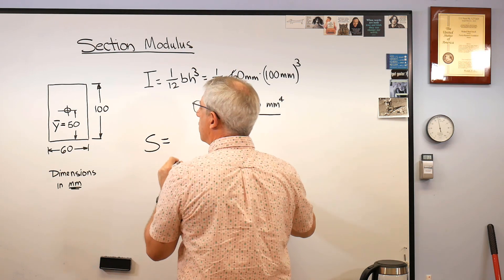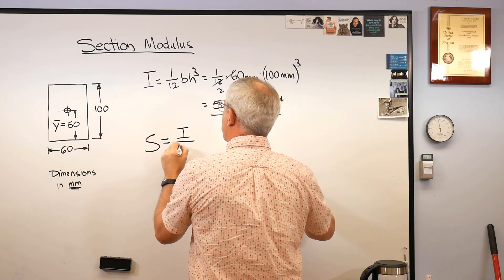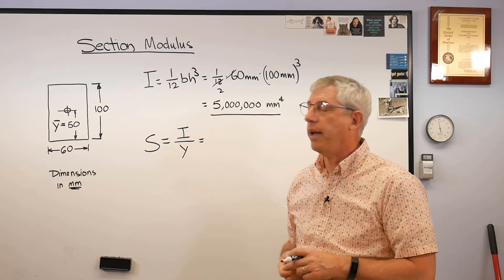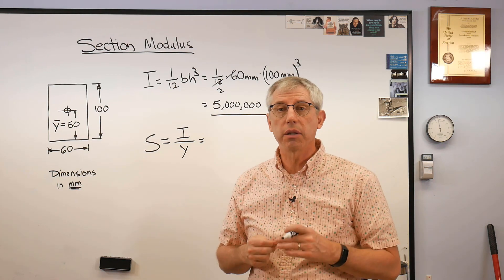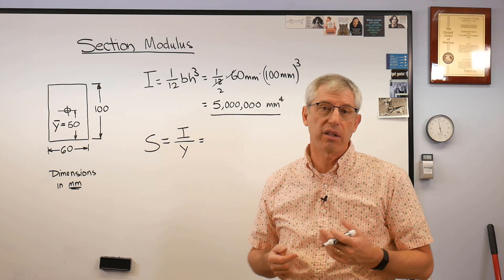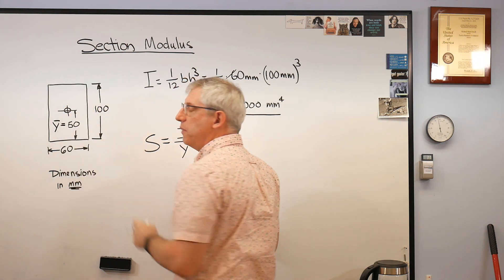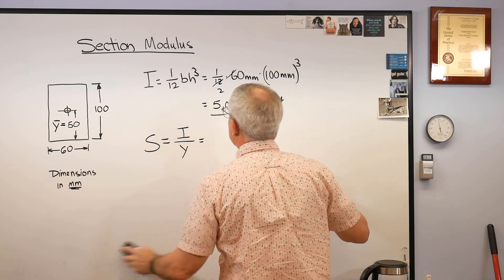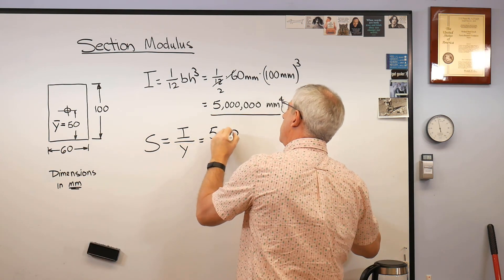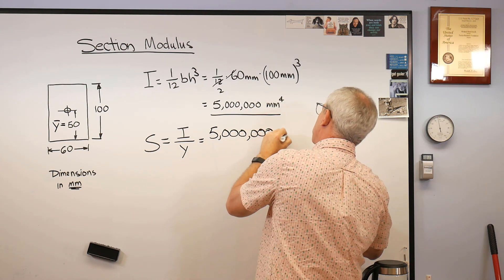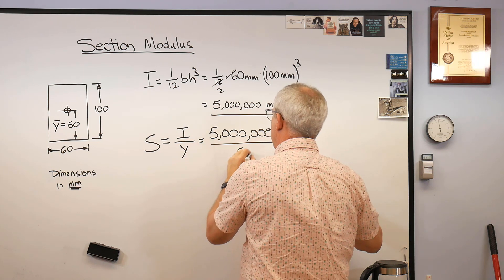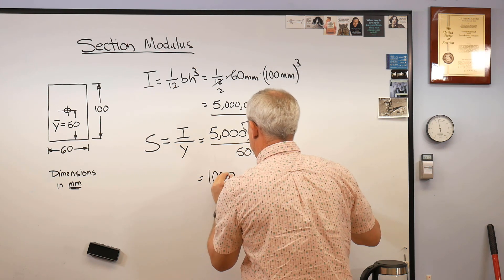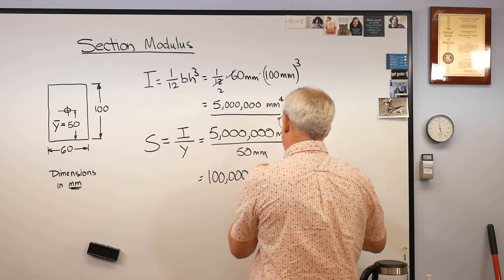Now the S for this, the elastic or the section modulus, is I over Y. Well what do you pick for Y? Well Y is the maximum possible distance from the elastic axis or the centroid. Well the farthest away you can get from this is 50 millimeters. So in this case this is going to be 5 million millimeters to the fourth over 50 millimeters.